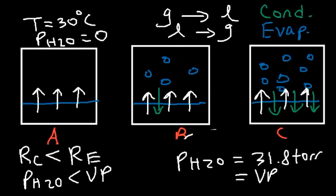Now we can define what these two pressures mean. The partial pressure is simply the pressure exerted by water molecules at any given point — it's proportional to the number of molecules in the vapor phase. The vapor pressure is a specific partial pressure: it's the partial pressure where you've reached a state of equilibrium, where the rate of evaporation equals the rate of condensation. That specific value is temperature dependent — it increases with temperature because raising the temperature increases the rate of evaporation, causing more water molecules to enter the gas phase, which in turn increases the vapor pressure.